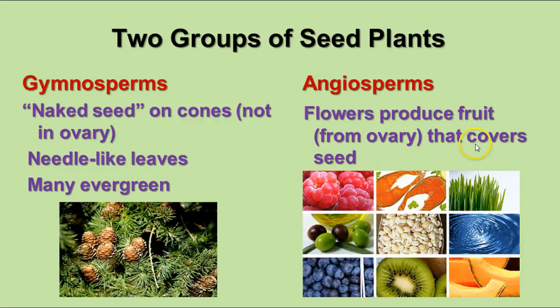Angiosperms, on the other hand, are flowering plants. They have flowers that produce fruit from the ovary, which covers the seed. Some of them are fruits like kiwis and berries, but others are not anything that you would recognize as being a fruit. By definition in botany, fruit is the ripened ovary containing the seeds.